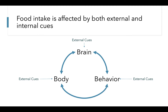Food intake is affected by both external cues, defined as factors outside of us such as the sight or smell of food, and internal cues, defined as factors inside of us such as hormones. These cues affect our brains, our behaviors, and our bodily sensations.